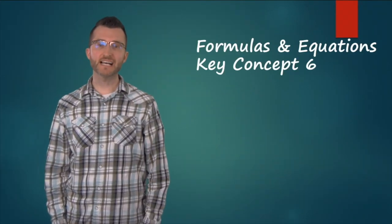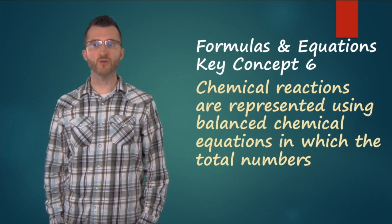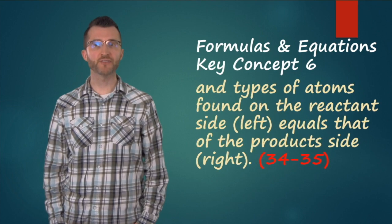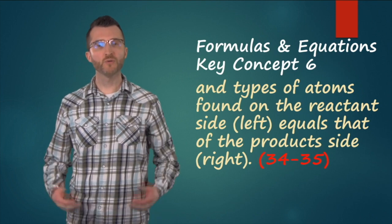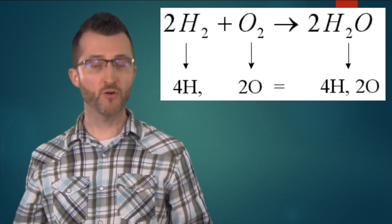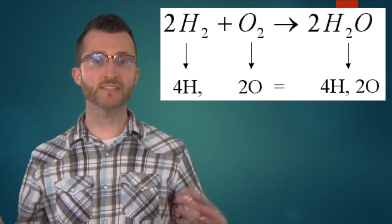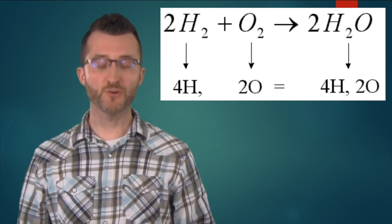Formulas and equations key concept 6. Chemical reactions are represented using balanced chemical equations in which the total numbers and types of atoms found on the reactant side left equals that of the product side right. When you're balancing a chemical equation, you want to make sure that you only change the coefficients, never the subscripts found within the chemical formulas. Now to find the total atoms of an element in your chemical equation, you want to multiply the coefficient by the subscript. Now if you do this on both sides of the equation, then you can ensure that the equation is balanced.